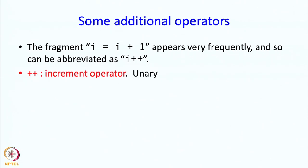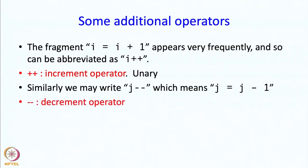So it is an increment operator, it is unary, and similarly you can have minus minus which means j equal to j minus 1, and minus minus is the decrement operator. Now plus plus and minus minus are actually quite tricky.